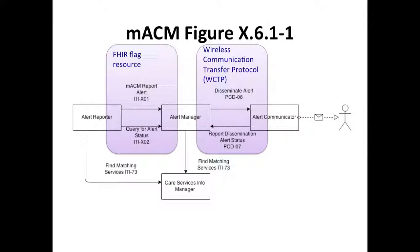In the MACM profile, the ITI X01 and ITI X02 transactions — these are draft transaction numbers and will be changing — are based on the FHIR Flag resource. There is a resource called Flag in FHIR that we are profiling for this standard. On the right-hand side, the Disseminate Alert and Report Dissemination Alert Status transactions are based on WCTP, adopting the PCD-06 and PCD-07 transactions from the existing ACM profile without change. The right-hand side remains unchanged in this draft version; it is the left-hand side — the new FHIR-based transactions — that is being updated and will be used going forward.